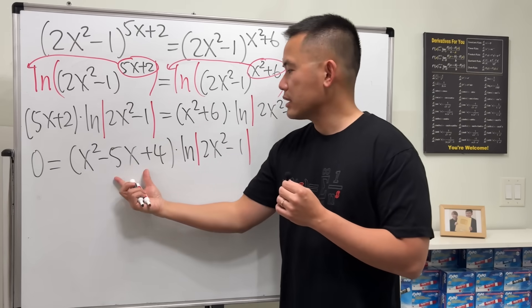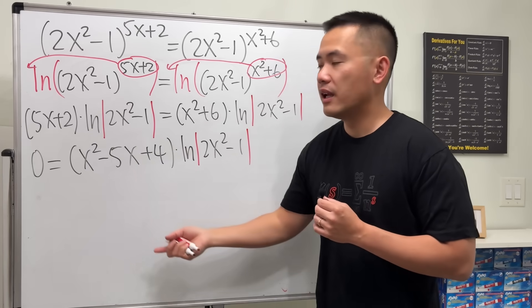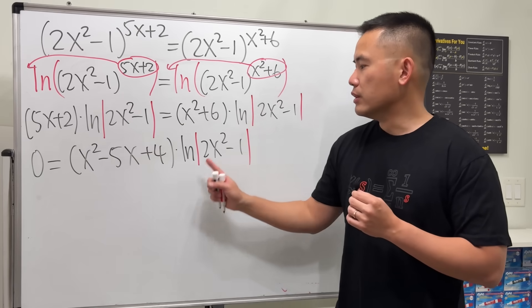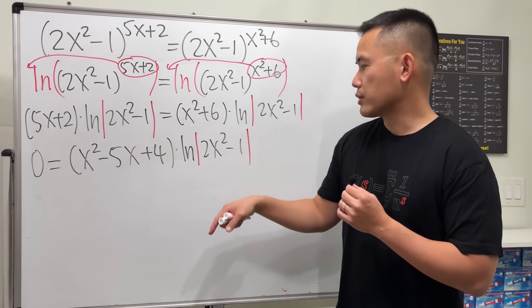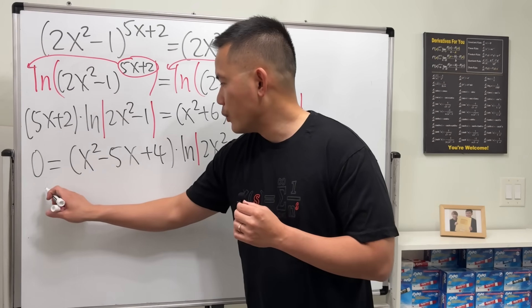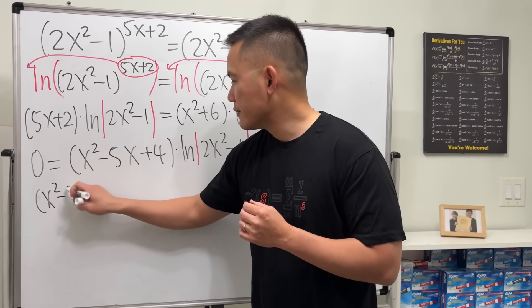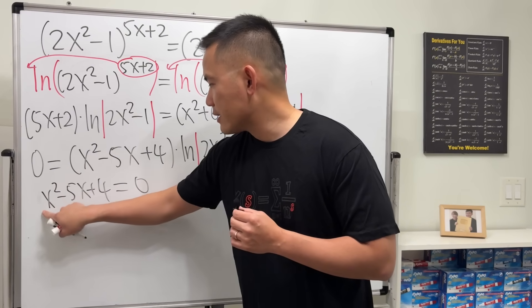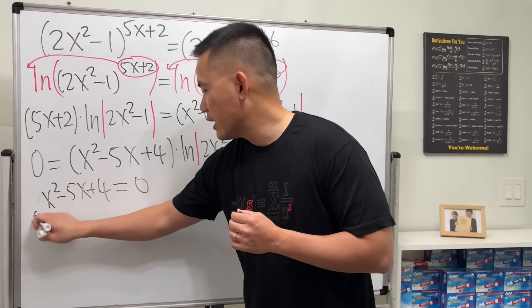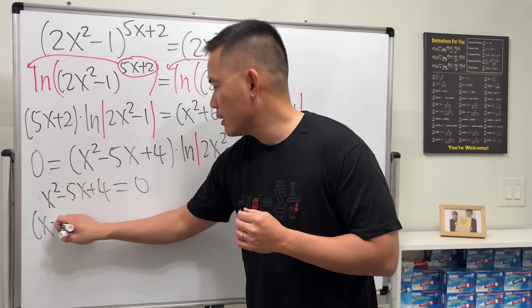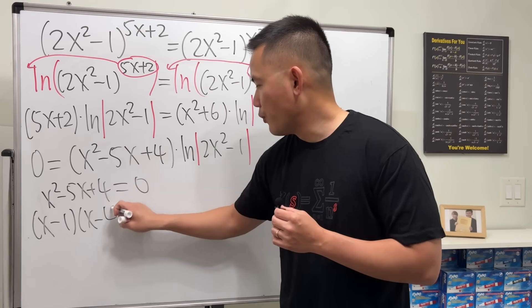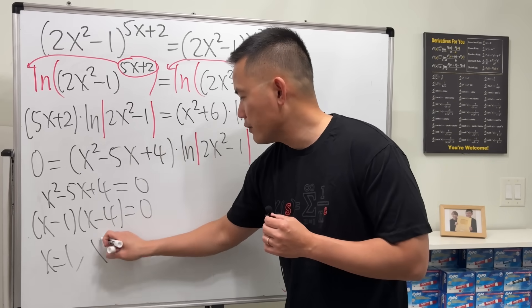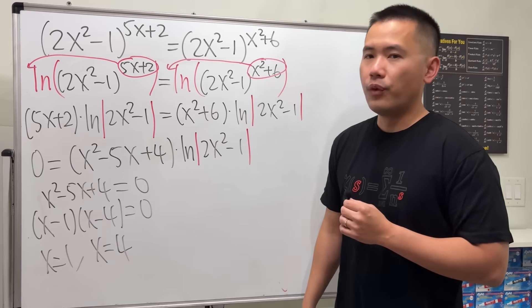We have a product of two things equal to zero, so we set each factor equal to zero. For x² - 5x + 4 = 0, we factor to get (x - 1)(x - 4) = 0, giving x = 1 and x = 4.